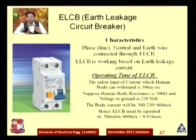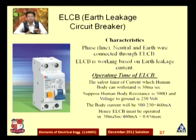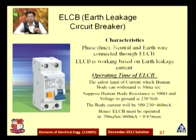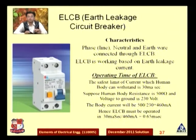The operating time of ELCB: the safe limit of current the human body can withstand is 30 milliampere-second. ELCB should operate before that limit. Suppose human body resistance is 500 ohms and voltage to ground is 230 volts (standard in India). The body current will be 230 divided by 500, which gives 460 milliampere. So ELCB must operate in 30 milliampere-second divided by 460 milliampere, which equals 0.065 seconds — that is 65 milliseconds, meaning the operating characteristic of ELCB is very fast.